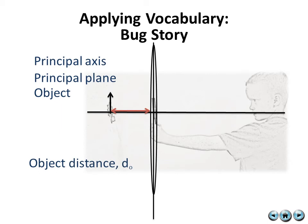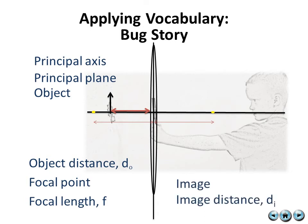The object distance, again, is that distance from the object to the center of the lens. And the focal point is based on the curvature of that magnifying glass Ian is using, with a focal length from lens to either focal point. The image distance and image will be identified in our upcoming steps.